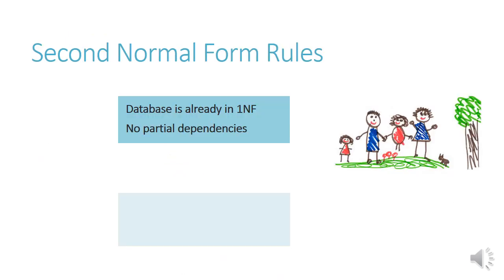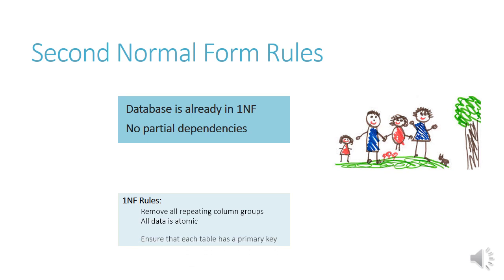The second normal form rules are: first, the database must already be in first normal form before you start; and second, there must be no partial dependencies. Remember, partial dependencies is when a field is dependent on only part of a composite key. The first normal form rules were: remove all repeating column groups, all data is atomic, and ensure each table has a primary key.